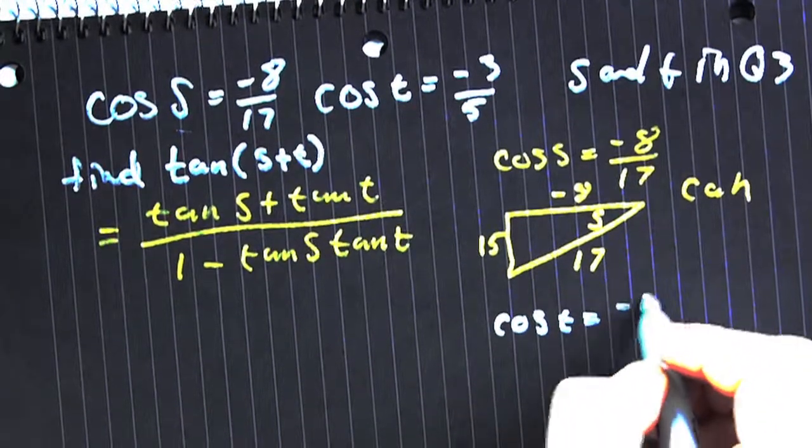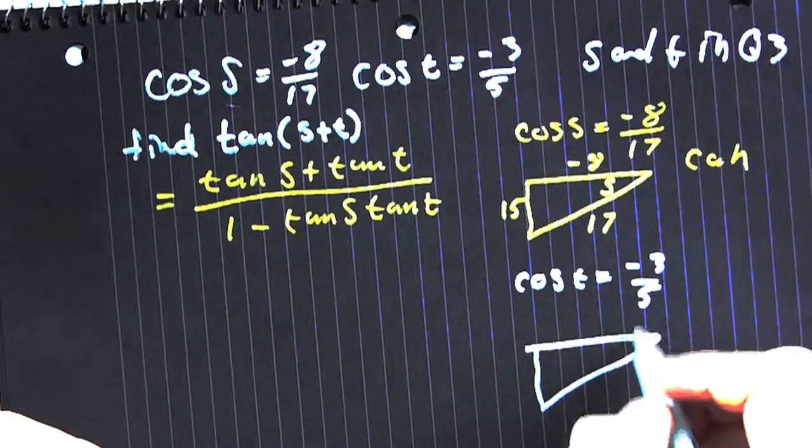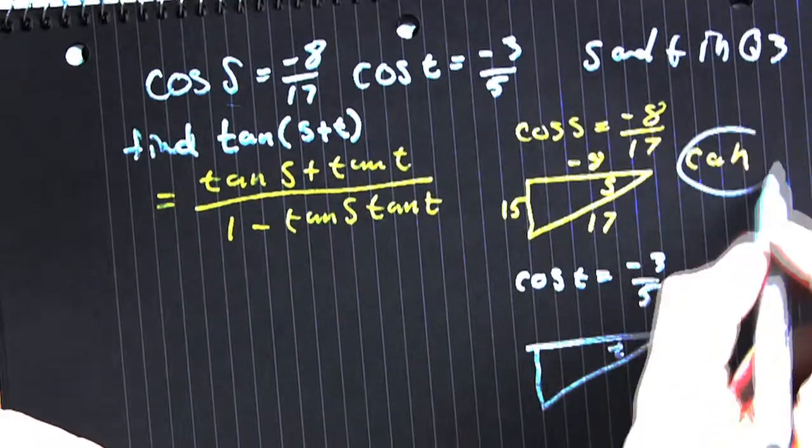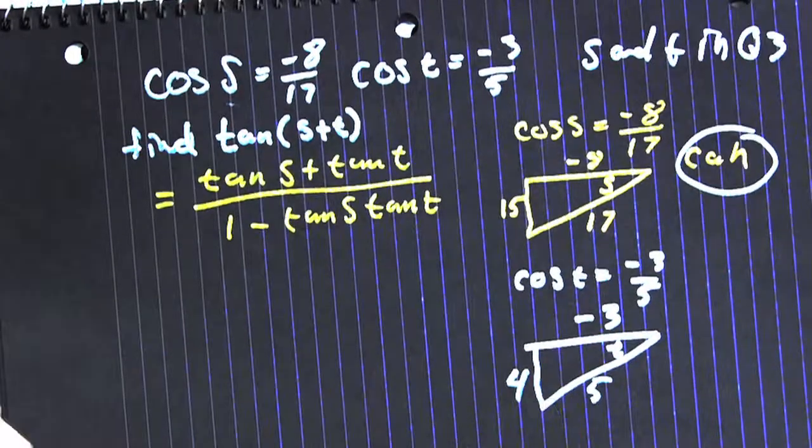Now, let's make it for the t triangle. Again, it's adjacent over hypotenuse. So we go and we label the adjacent side minus 3 and the hypotenuse. Oh, that should be a minus 4, too.